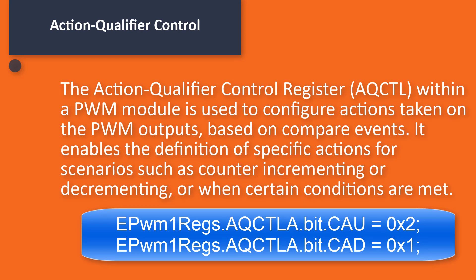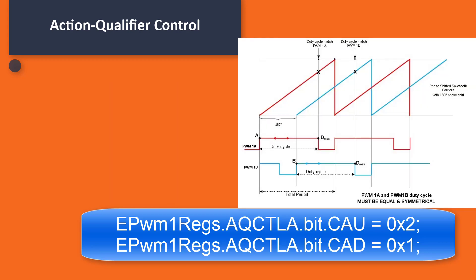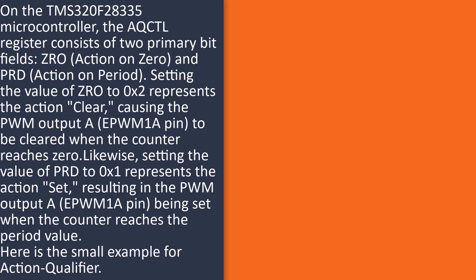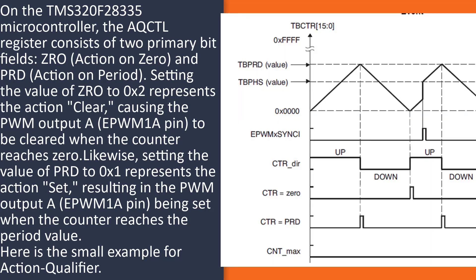Action Qualifier Control. The Action Qualifier Control Register (AQCTL) within a PWM module is used to configure actions taken on the PWM outputs based on compare events. It enables the definition of specific actions for scenarios such as counter incrementing or decrementing, or when certain conditions are met. On the TMS-320F28335 microcontroller, the AQCTL register consists of two primary bit fields: ZRO (action on 0) and PRD (action on period). Setting ZRO to 0x2 represents the action clear, causing the PWM output A (EPWM1A pin) to be cleared when the counter reaches 0. Setting PRD to 0x1 represents the action set, resulting in the PWM output A (EPWM1A pin) being set when the counter reaches the period value.